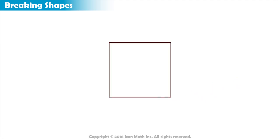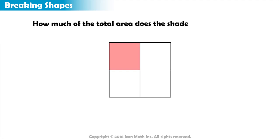Suppose we divide this square into equal parts like this, and then shade only one part out of the four parts. Now can you tell how much of the total area does the shaded part have? Since we divided our square into four parts, we actually divided its total area into four equal parts as well.